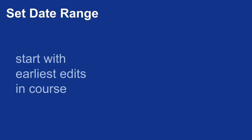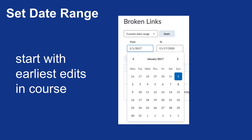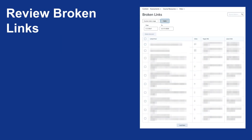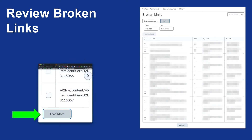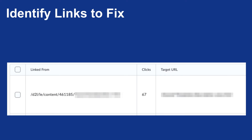Set the date range starting with the earliest possible edits in the course, moving up to today, to make sure you capture any possible broken link errors from any date. Then review those links. You can see an example that includes potentially a whole lot of broken links. You may need to click the load more button to see the full scope. Then identify what actually needs to be fixed — you can tell what's being used by looking at the number of clicks.